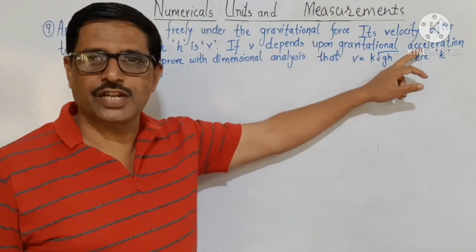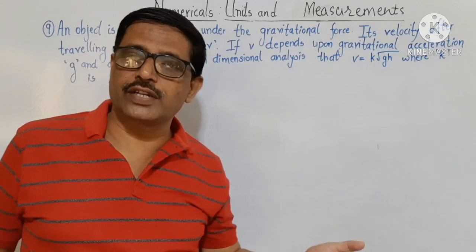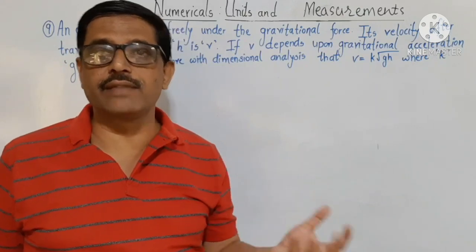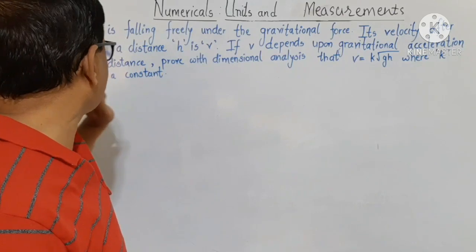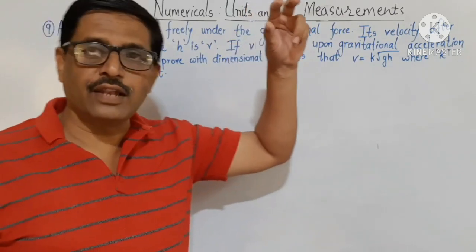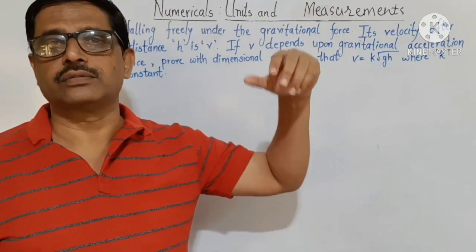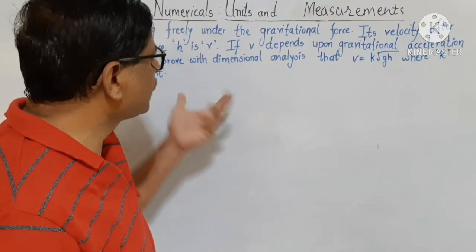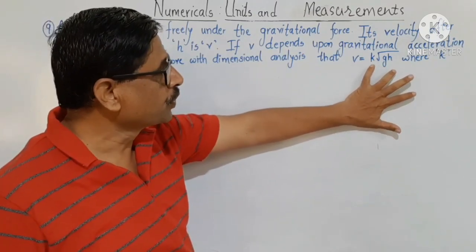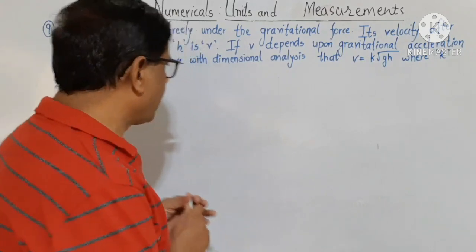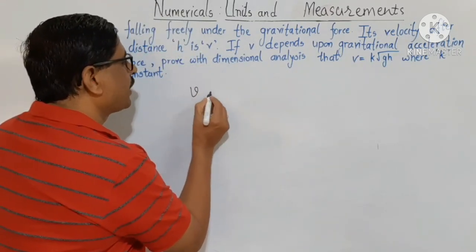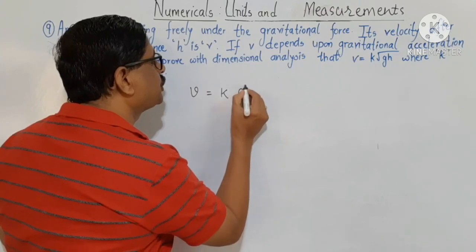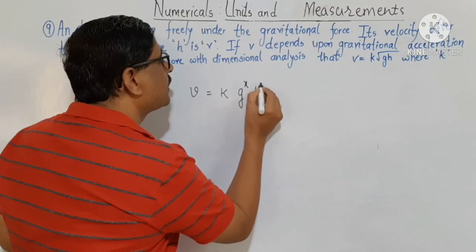The velocity depends on gravitational acceleration g, which is the acceleration given by gravitational force, and on the height h from which it is allowed to fall. Using dimensional analysis, we have to prove the formula. Let velocity v depend on a constant of proportionality k, the acceleration due to gravity g raised to x, and the height h raised to y.